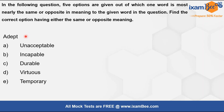Next word: 'adept.' Adept means very skilled or proficient at something — for example, 'she is an adept singer' or 'she is adept at mimicry.' 'Unacceptable' is not related to adept. 'Incapable' is the opposite — adept means skilled at something, incapable means unable to do something. So option B — incapable — is the antonym and the correct answer.